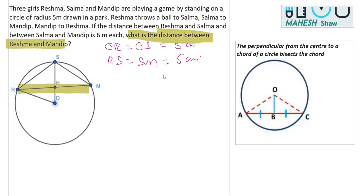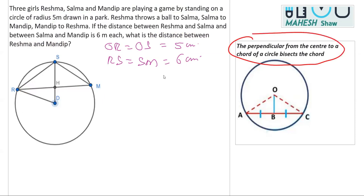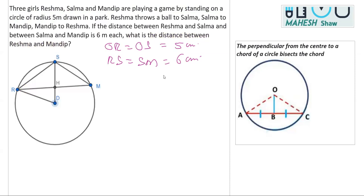In order to find this distance, we are going to use the property that a perpendicular drawn from the center bisects the chord. That means if OB is perpendicular to AB, then we can write AB is bisected. Now let's see how we can use this property — for that we will first prove two triangles congruent.